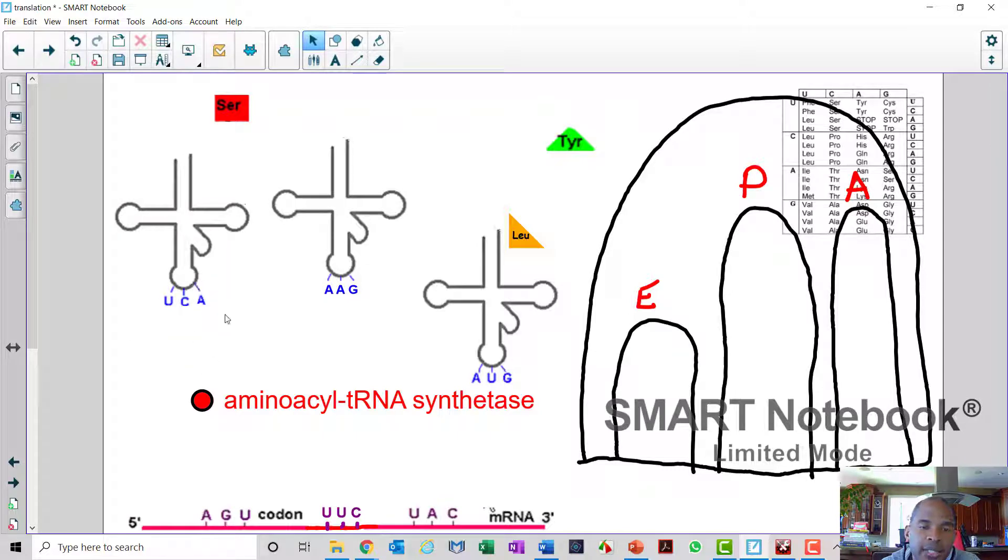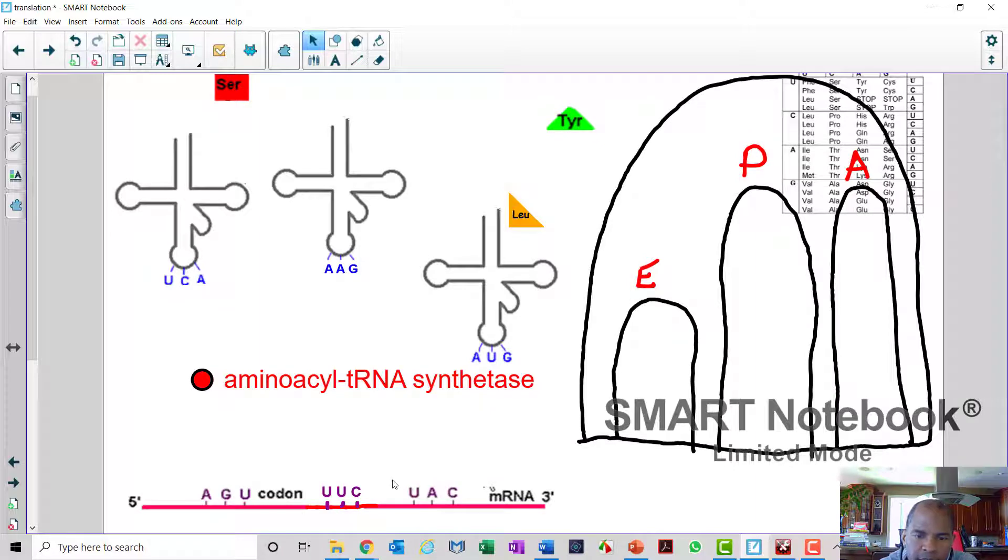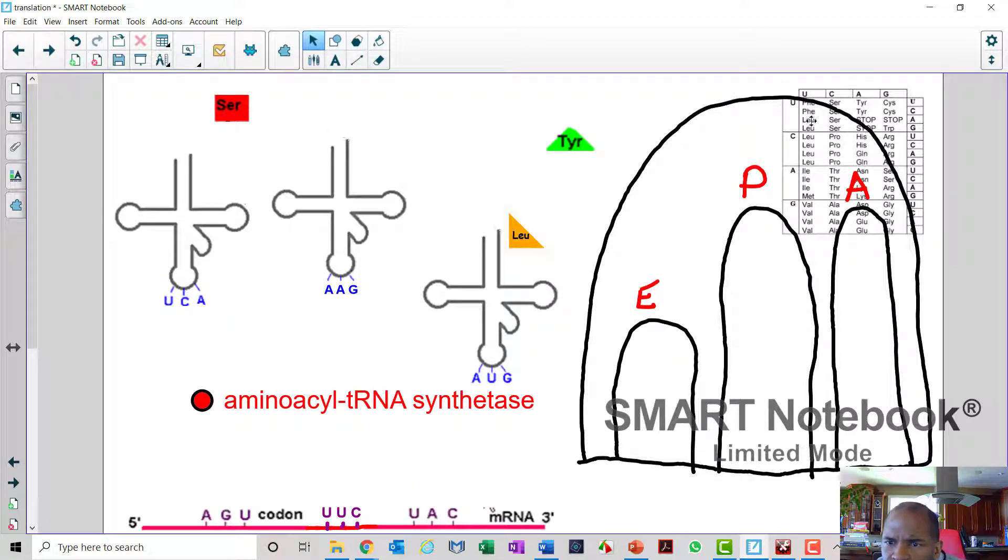Remember, this is an anticodon. So this anticodon is going to not be the same thing you see on the genetic table here. So I'm not going to be true to the anticodon. I'm just going to demonstrate how this would work, right? UUC. UUC is leucine, okay. And the anticodon for UUC here is going to be what? It's going to be GAA. GAA. So that's the anticodon.